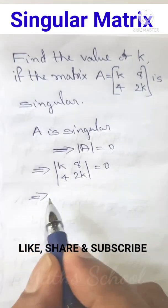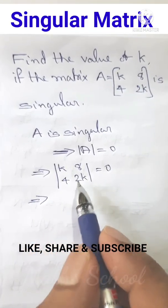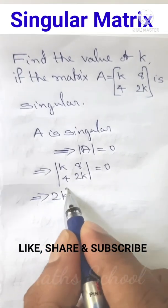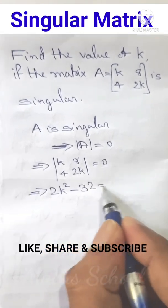Or, this implies we can evaluate this determinant. That is, K into 2K, 2K square minus 4 into 8, 32 equal to 0.